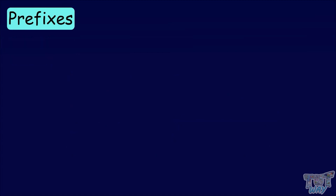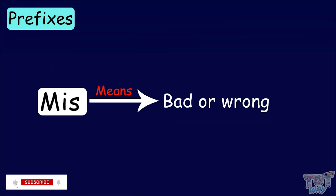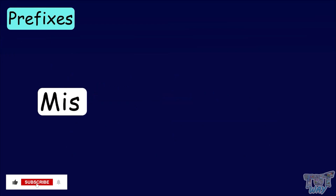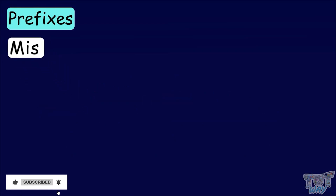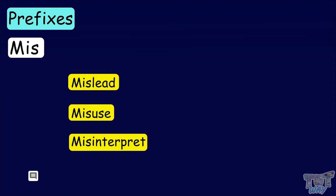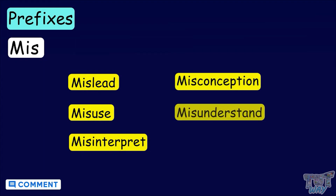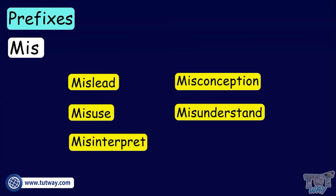Now here we have a prefix, mis, which means bad or wrong. Let's think of some words that begin with mis: mislead, misuse, misinterpret, misconception, misunderstand. And many more such words can be there.